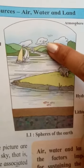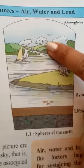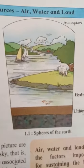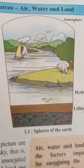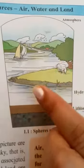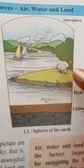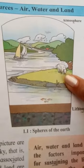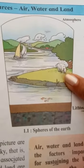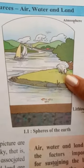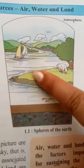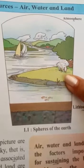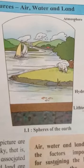Birds are flying in the sky. Second question: where is the cow grazing? See, the cow is here — the cow is grazing on land, in this open land.